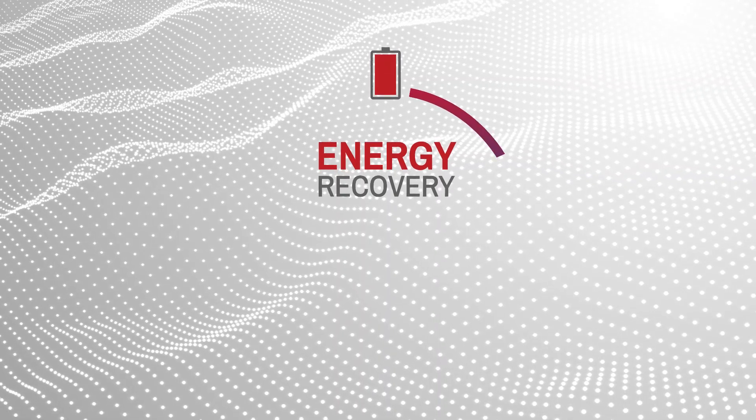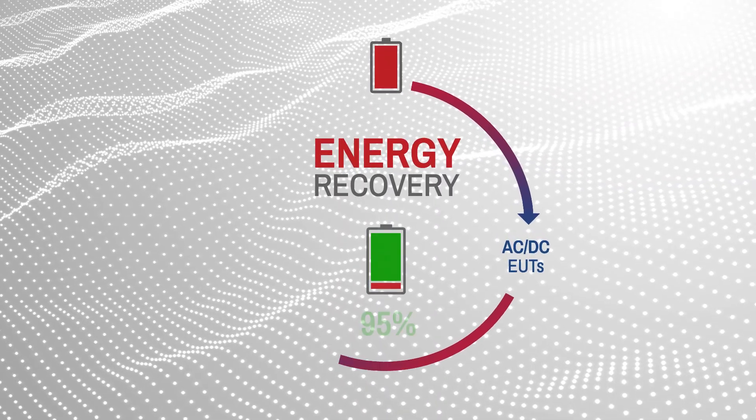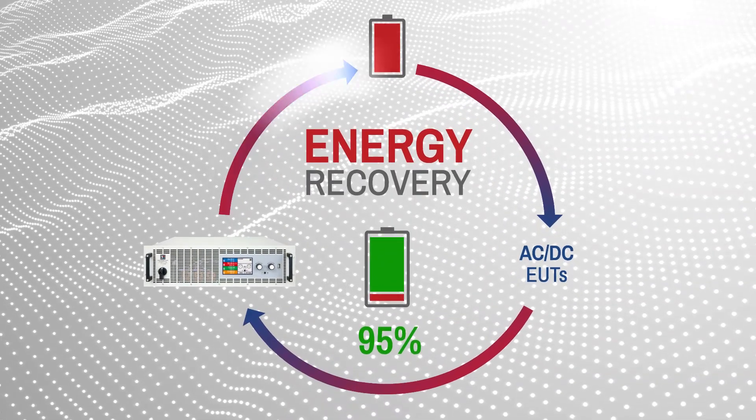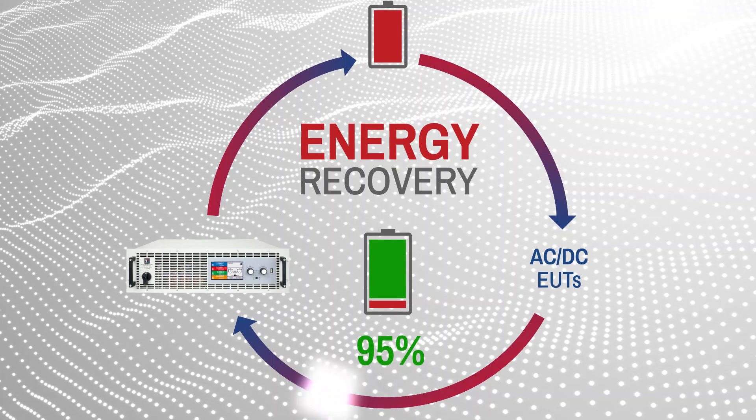Electroautomatics ELR series of regenerative electronic loads work by efficiently converting the DC input to an AC output that is fed back to the grid, and it's all handled in a compact rack mount chassis.